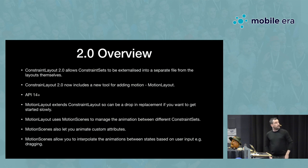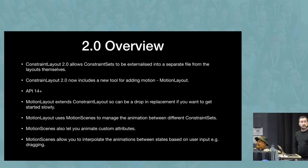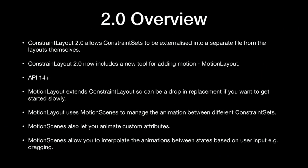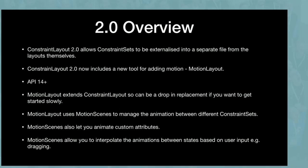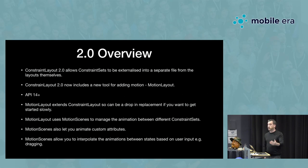2.0 of the library was released at Google I/O this year. John Horford and Nicholas Raud got on stage and told us about it and the new features. 2.0 is based on top of 1.3, so even though it's in alpha at the moment, it's still based on a solid and stable footing. MotionLayout extends ConstraintLayout, so if you're already using it, you can use MotionLayout as a drop-in replacement and get up to speed quite quickly.